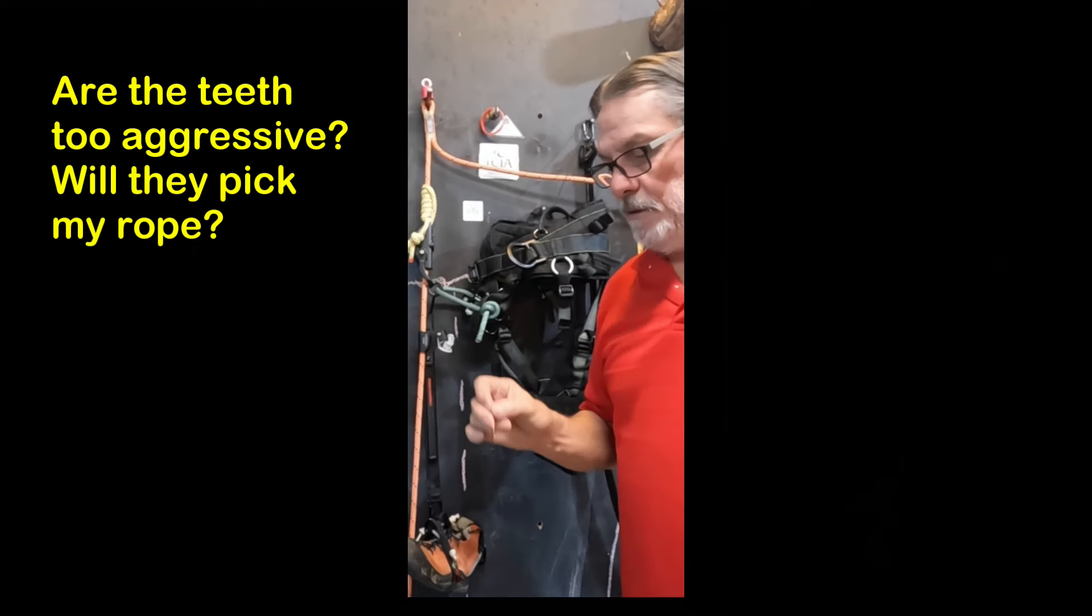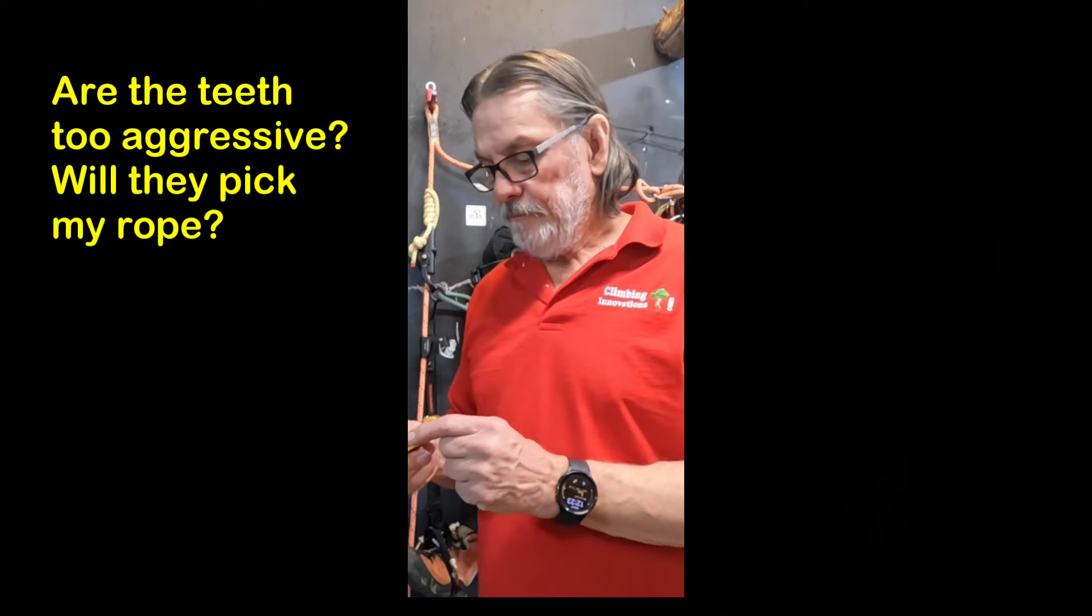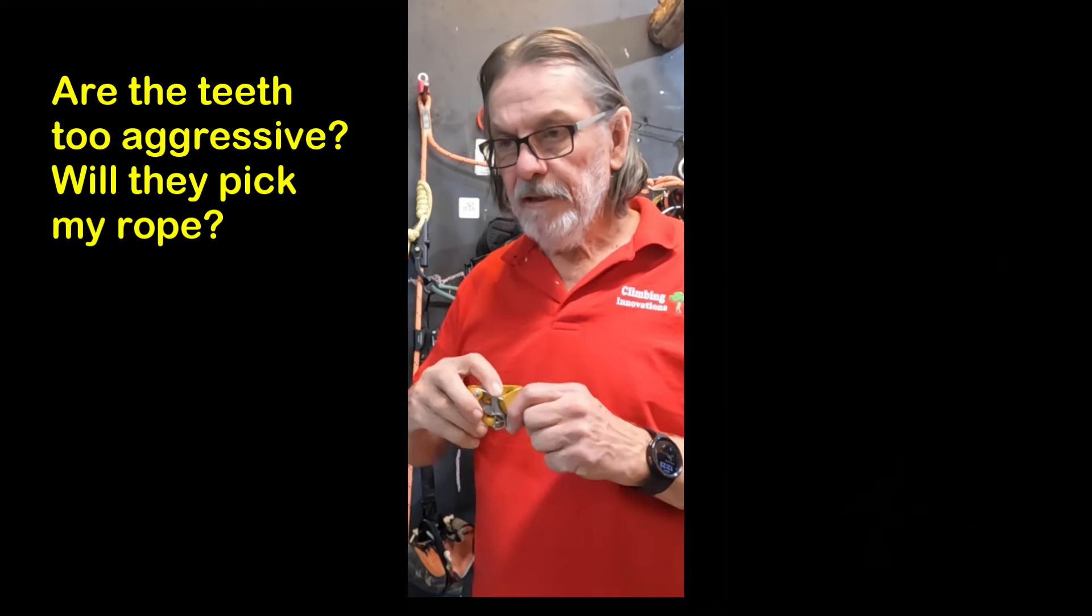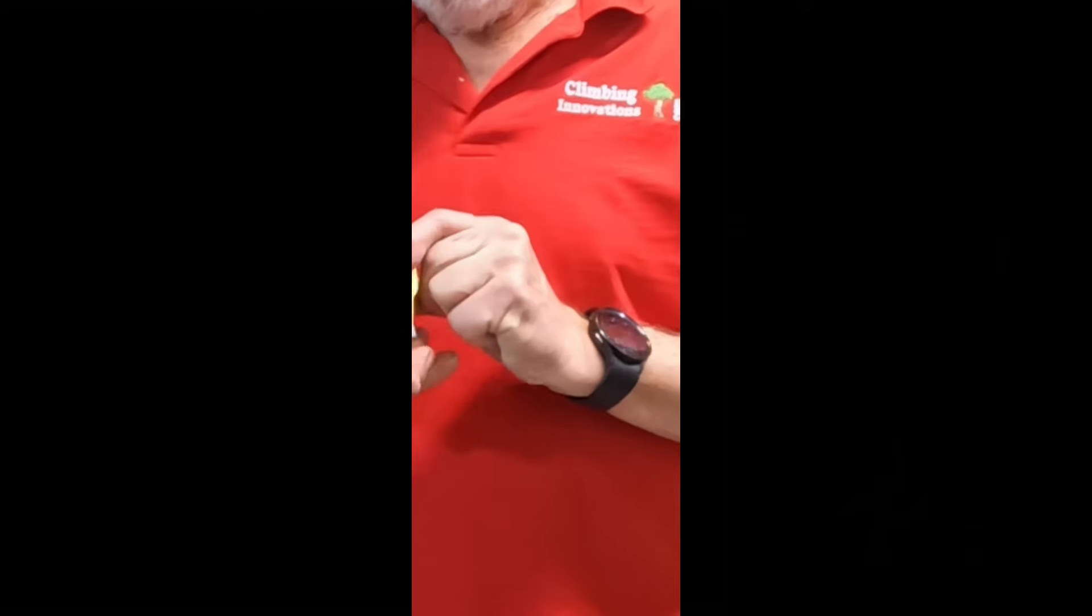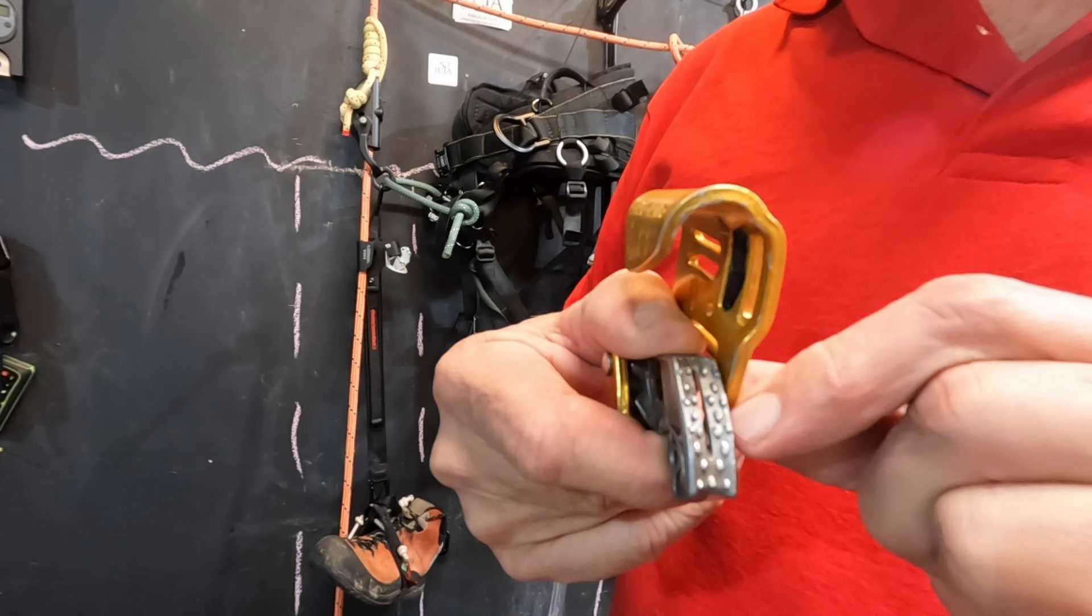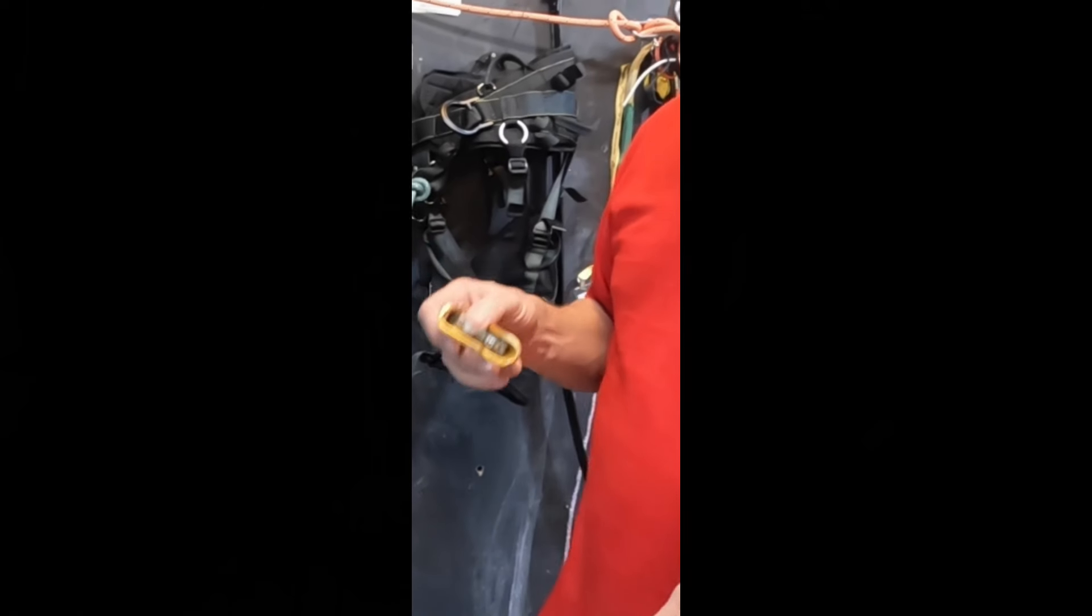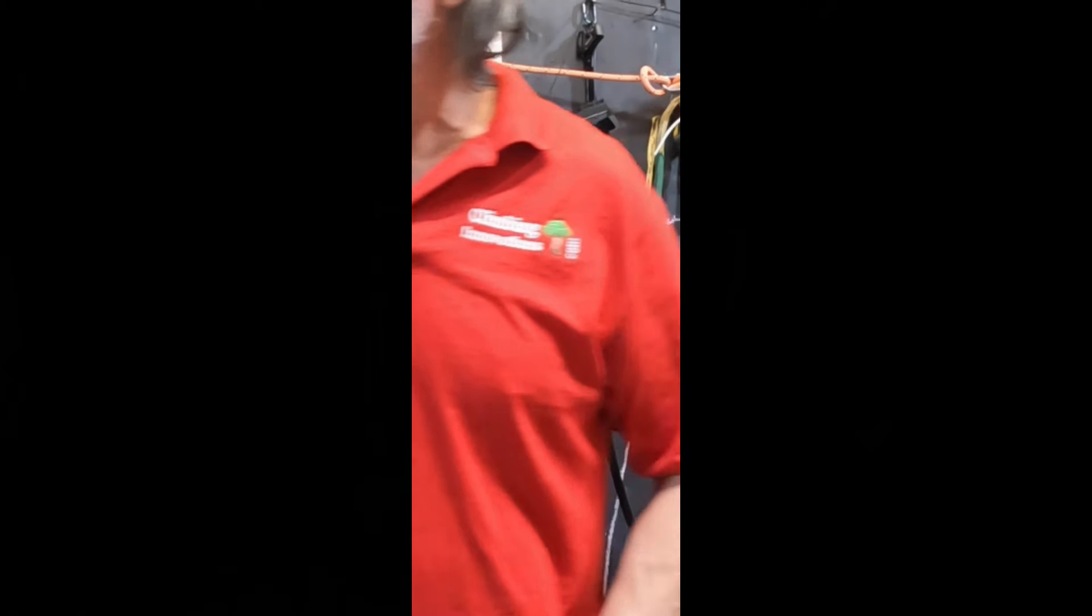And here's a question that I get. Ten years ago, I thought the teeth were a little too aggressive and they were picking the rope. So I don't know if you can see this, but what I did is I took a little Dremel. I took a little Dremel and I dulled these off just a little bit and I thought, oh great, now it won't pick the ropes. Well, then it wouldn't engage. It started to slip. So that's a recurring question that I get.